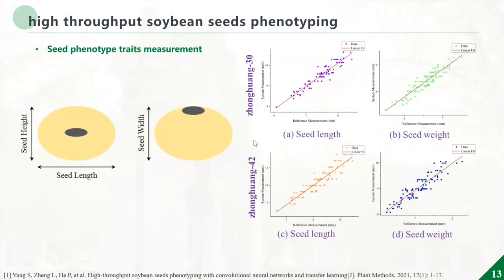After each seed is segmented into an individual seed, we can measure the seed height, seed length, and seed width. The results show that the system measurements have a fine linear relationship with the reference data.